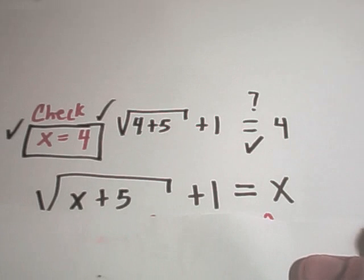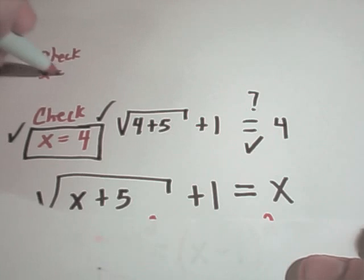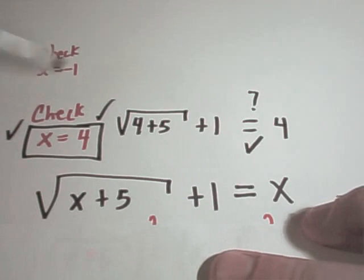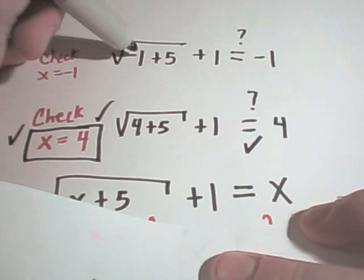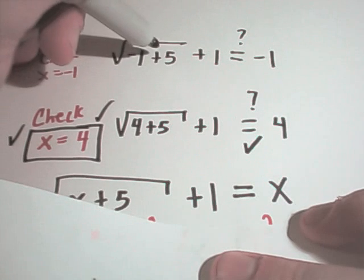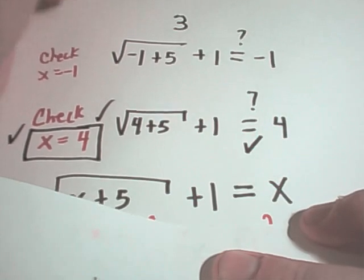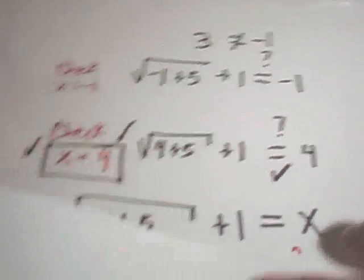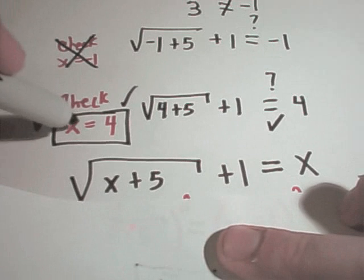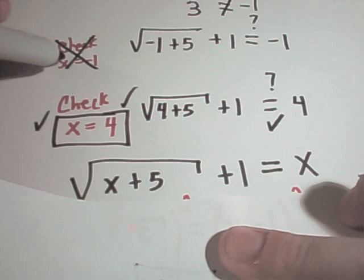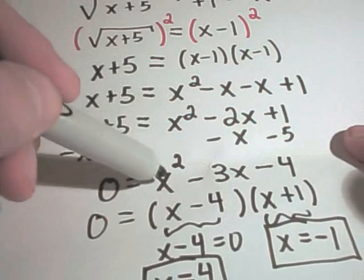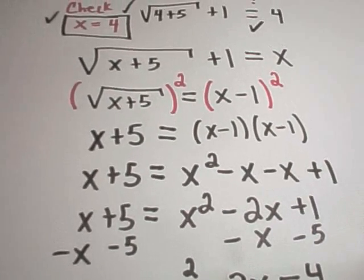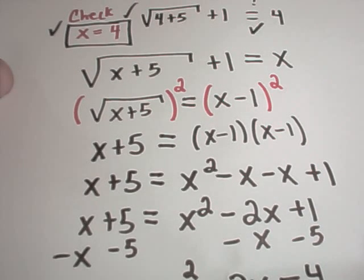Now let's check x equals negative 1. Plugging negative 1 in, I get square root of negative 1 plus 5 plus 1, and I'm wondering does that equal negative 1? Underneath the square root we get 4, the square root of 4 is 2, and 2 plus 1 is 3. Well, 3 definitely doesn't equal negative 1, so this solution doesn't work. We call x equals negative 1 an extraneous solution. Our only solution in this case is x equals 4.